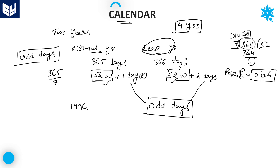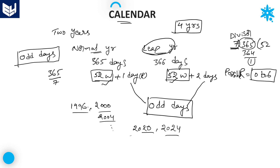For example, 1996, then 2000, 2004, 2008, 2012, 2016, 2020, and so on — for every 4 years, that is a leap year. 2020 was last year's leap year and the next leap year will be 2024. In every leap year, February month has 29 days, whereas for a normal year, February month has only 28 days.